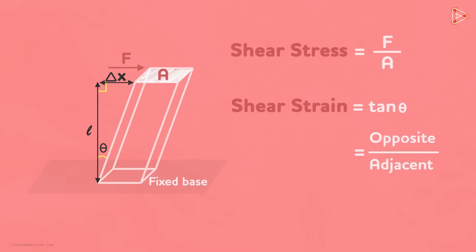Here the length of the opposite side of Theta is Delta X, and length of adjacent side is L. So it is equal to Delta X over L. So that is how shear strain is defined. Length of the deformation at its maximum over this perpendicular length.